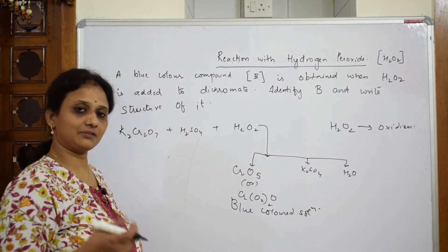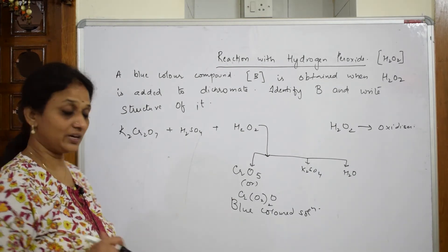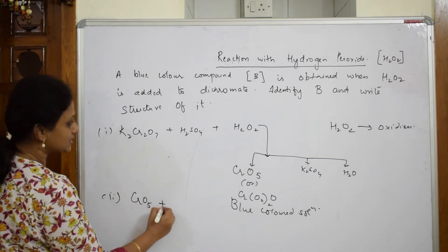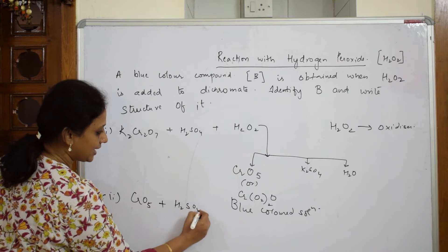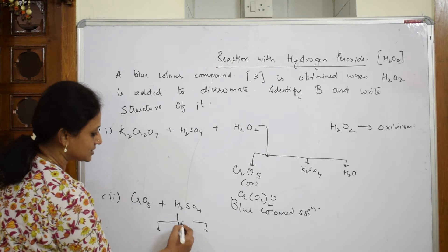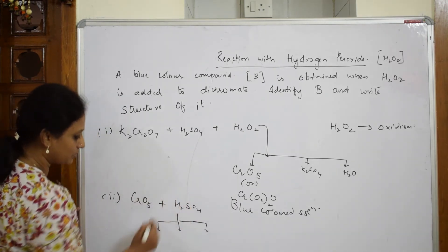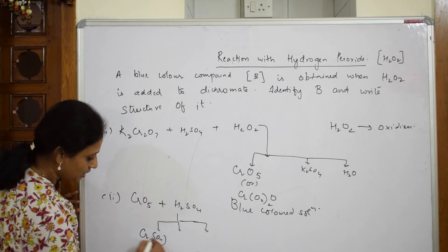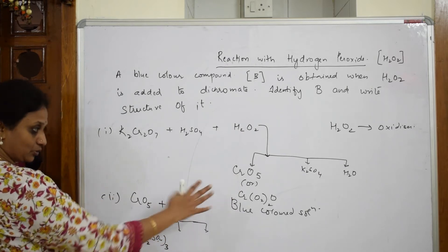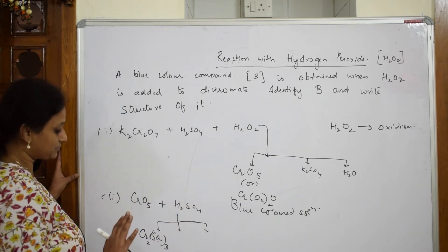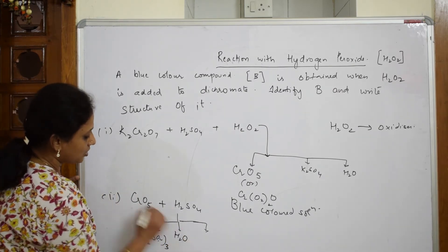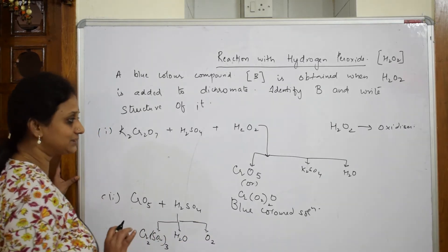This blue colored solution further, immediately after 2-3 seconds, is going to fade away. Why is it fading away? Because this chromium peroxide further reacts with your sulfuric acid which is still there, and it's going to form chromium sulfate Cr₂(SO₄)₃. The blue color has faded away, it becomes green. Chromium sulfate is formed. What are left out? Water is left out, oxygen also is left out. That's it.